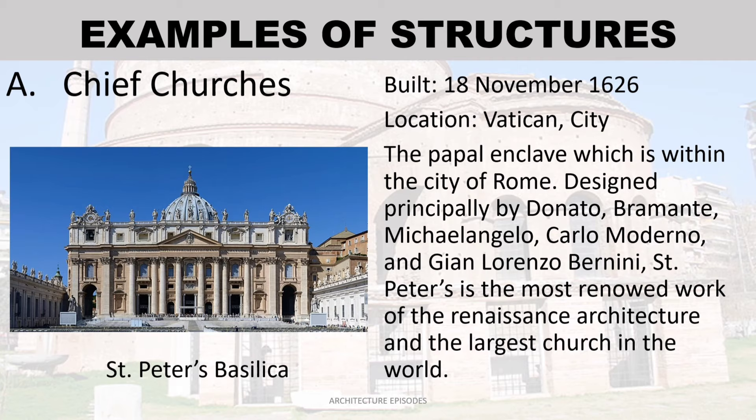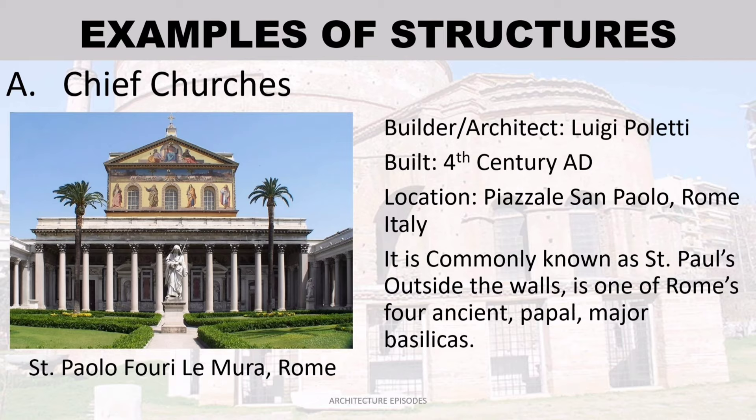Examples of structures: Saint Peter's Basilica — built November 18, 1626, located at Vatican City, the papal enclave within the city of Rome. Designed principally by Donato Bramante, Michelangelo, Carlo Maderno, and Gian Lorenzo Bernini. Saint Peter's is the most renowned work of Renaissance architecture and the largest church in the world.